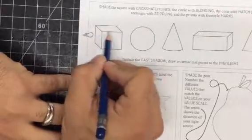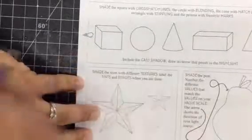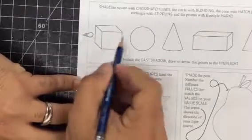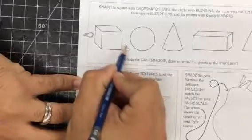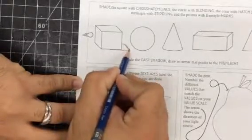Once I understand that crosshatch is going to be perpendicular lines. Here's my light source so my shadow is going to go this way, my cast shadow. I'm going to start off with a 6B.